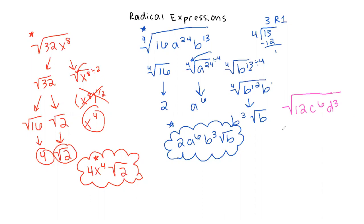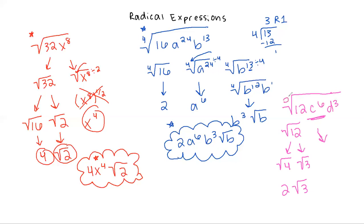Root 12 is not a perfect square root, so you would break it into root 4 times root 3. The square root of 4 is 2, and root 3 doesn't simplify anymore. For c to the sixth, when we take the square root, we have an even root number and an even exponent inside. Dividing gives us c to the third, which is an odd exponent — so don't forget that this should have an absolute value bar around it, just like we covered last week.